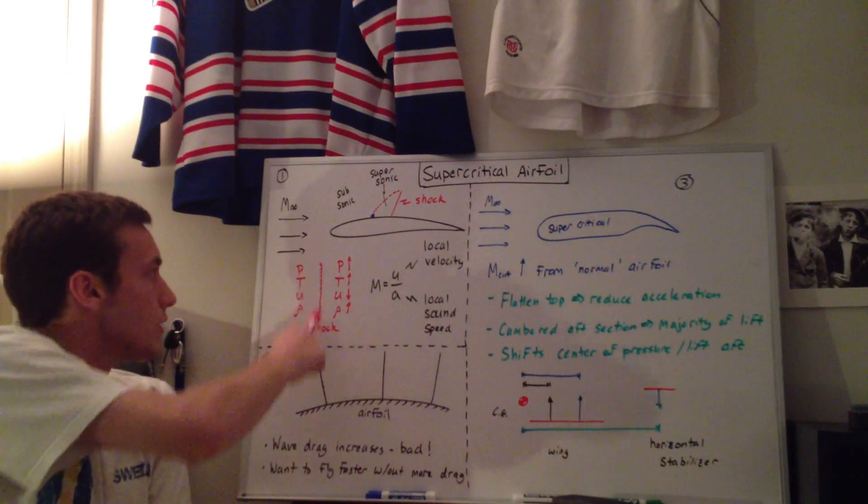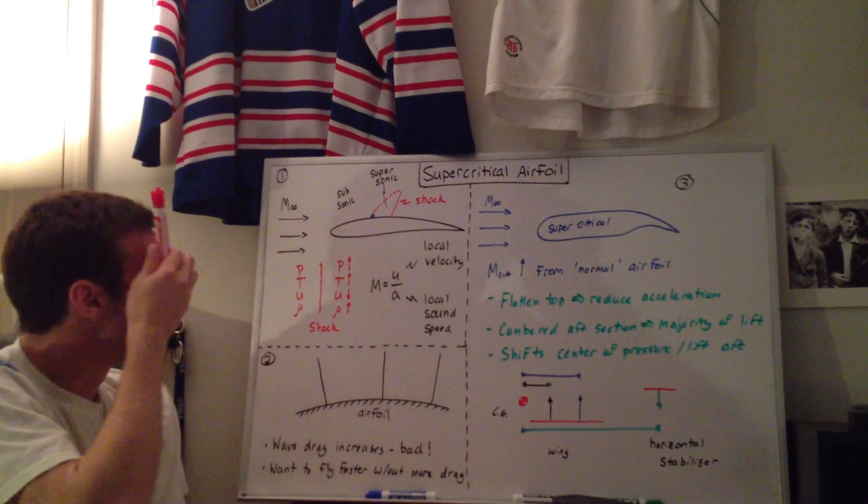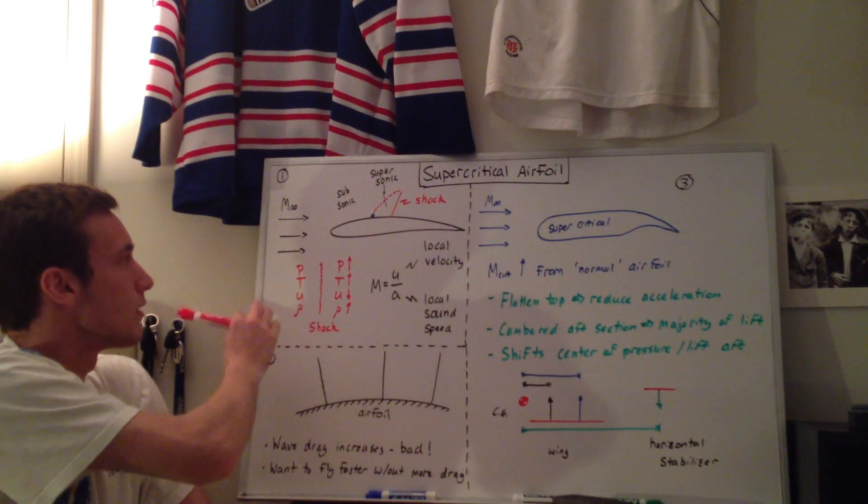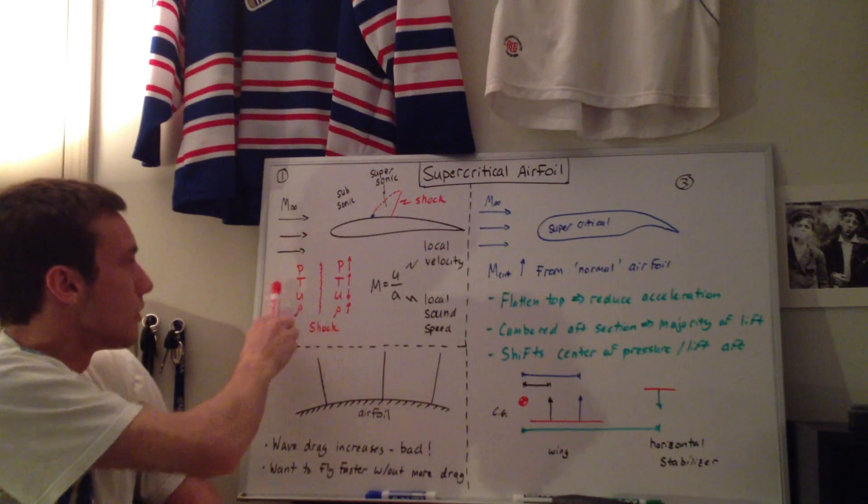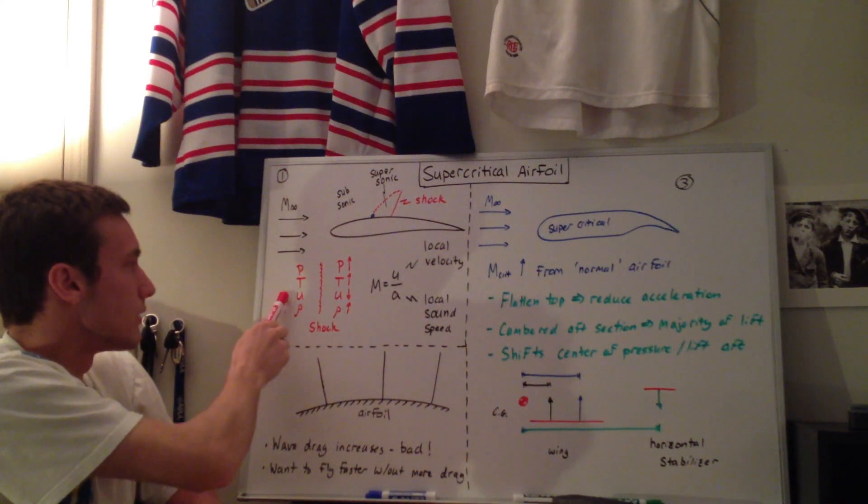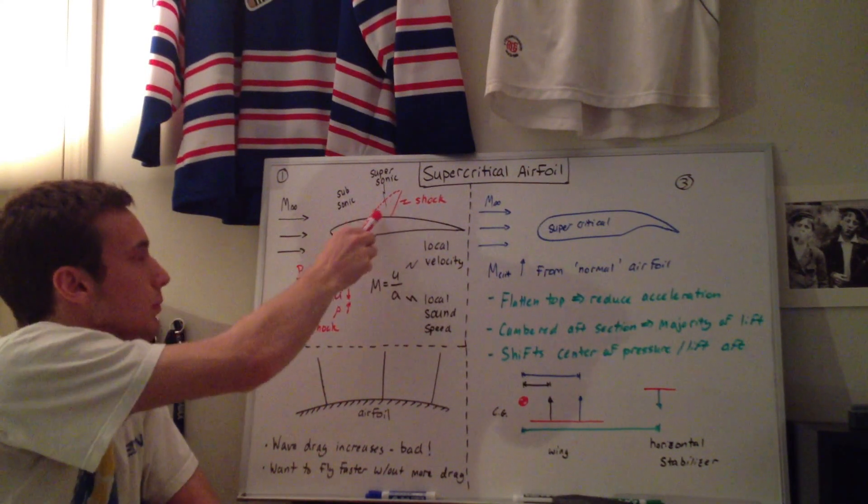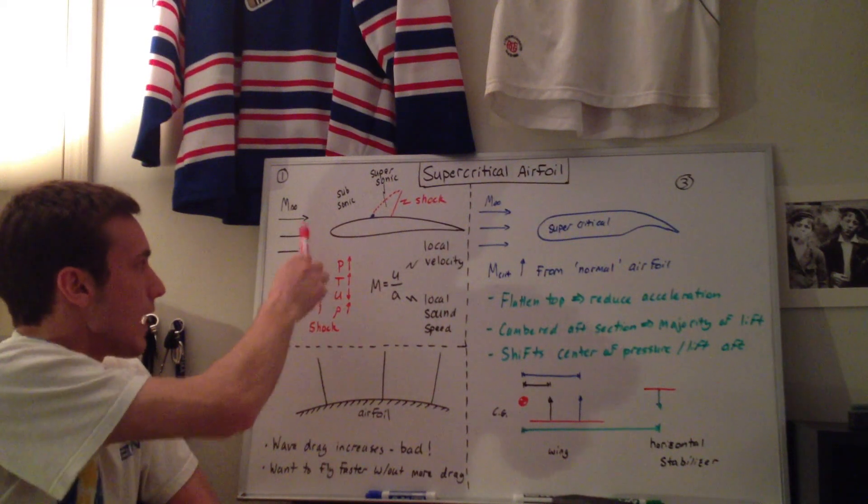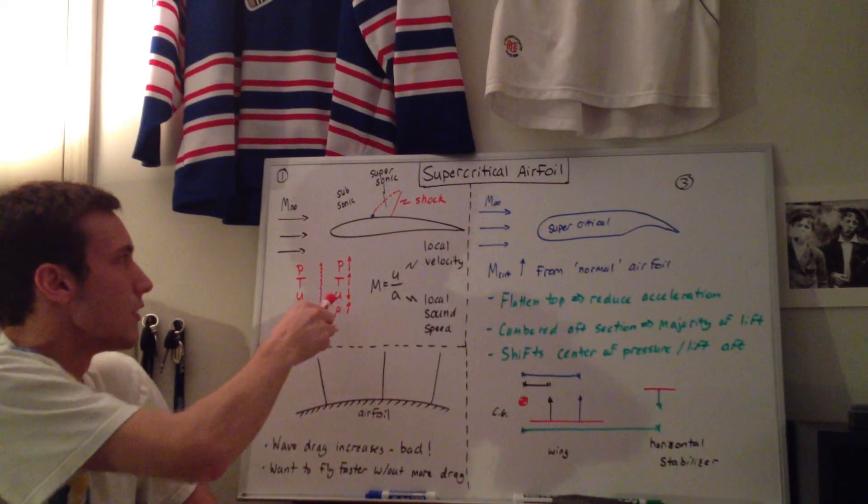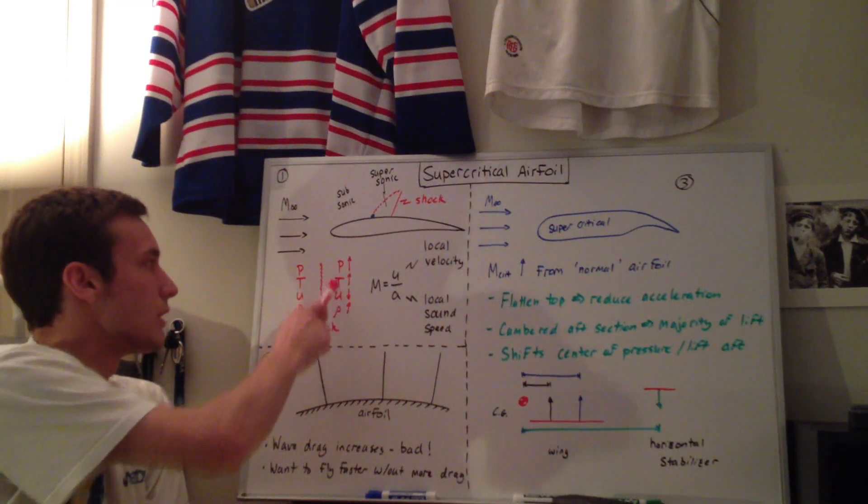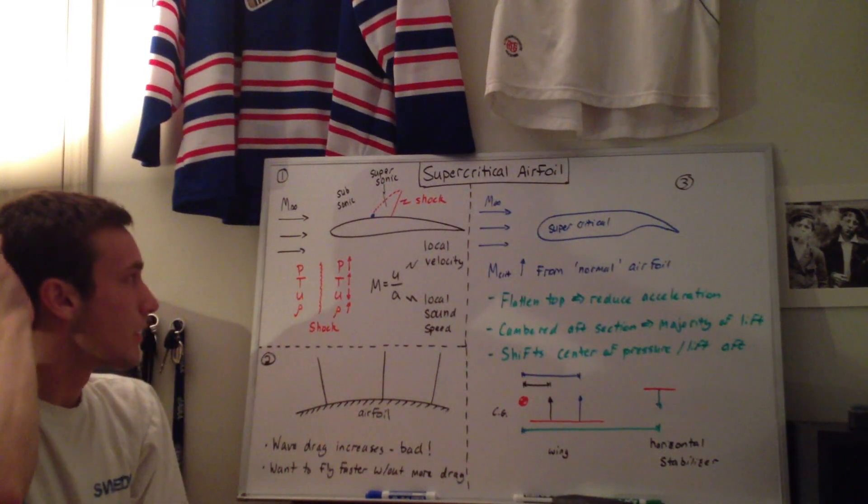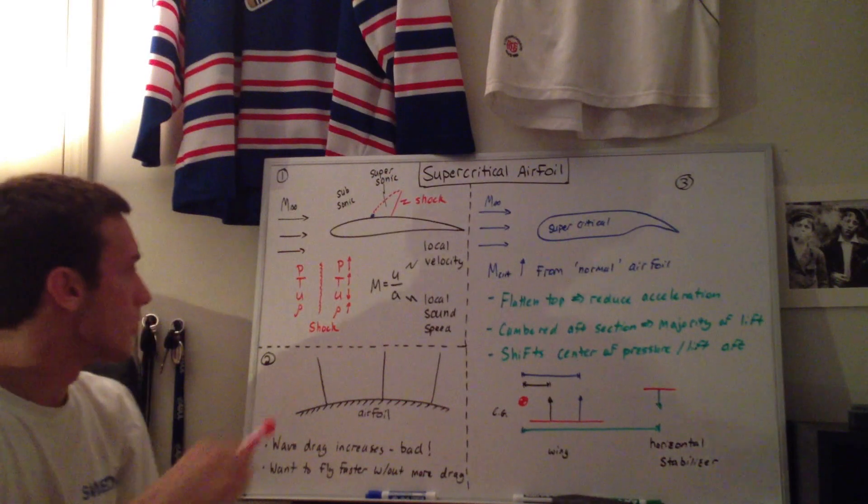Okay, so here's a normal shock as you can see here. On the left side in the supersonic region here, we have a pressure, temperature, velocity, and density before the shock wave. And then after the shock wave, the shock wave essentially slows the flow down, but in doing so it increases the pressure, the temperature, the density behind the shock. Okay, so why is that important? Now we're going to move on to section 2.